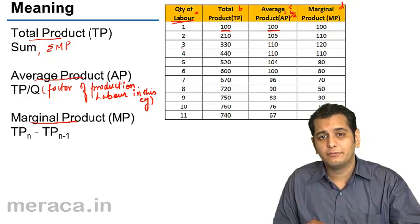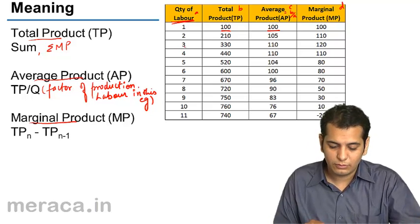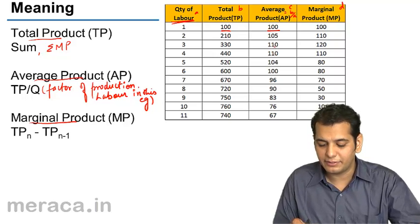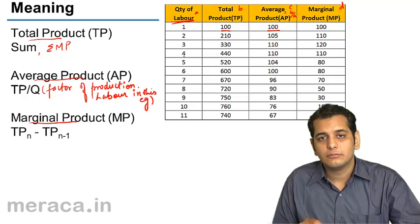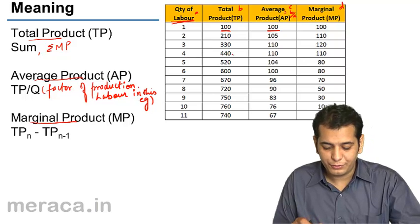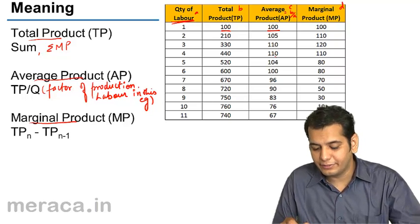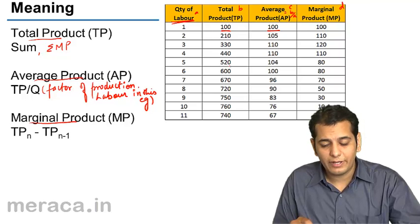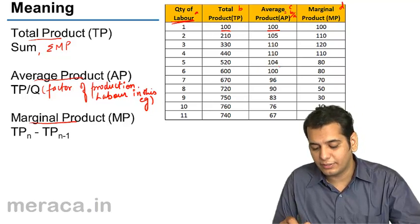At the third level, when one more labor is employed giving 3 total, the Total Product increases to 330 and the Average Product rises to 110 — derived by dividing 330 by 3. When the fourth labor is employed, total production rises to 440 and the Average Product remains the same at 110. When the fifth labor is employed, Total Product rises to 520 and the Average Product starts to decline, falling to 104 from 110.